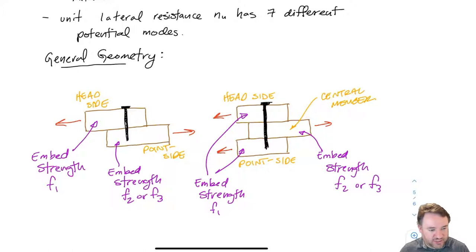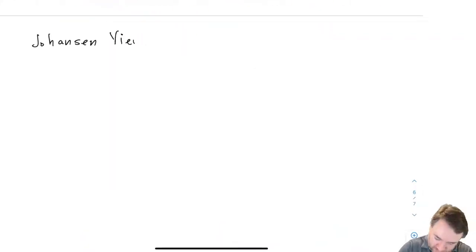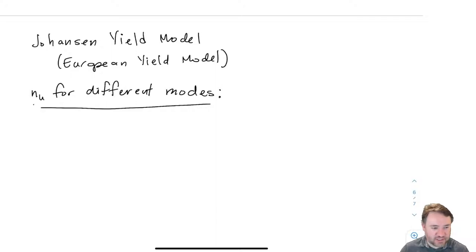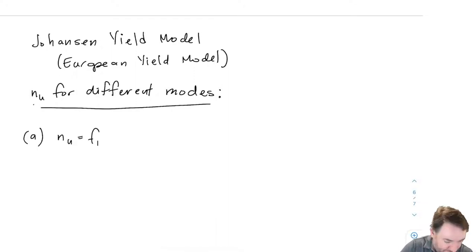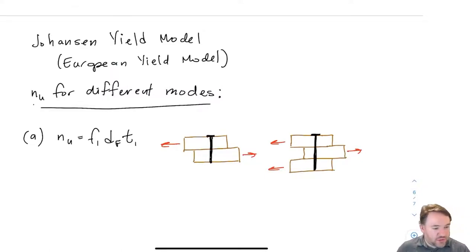All of these different equations for strength — that's lateral nail strength per nail, so for just one nail, that's what the small NU is — are based on the so-called Johansson yield model, named for the person who developed it in the mid-20th century. This is also called the European yield model. Basically, most wood standards around the world have adopted this yield model for determining strength of nailed joints. So we're going to go through each failure mode one by one. This is the first one, mode A.